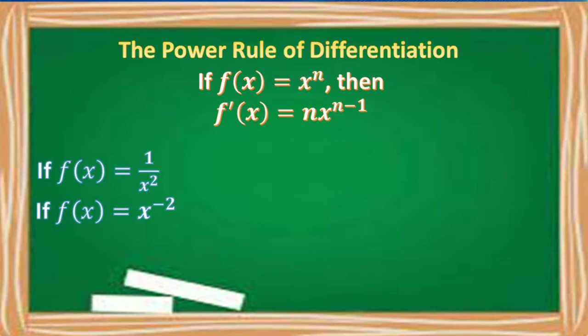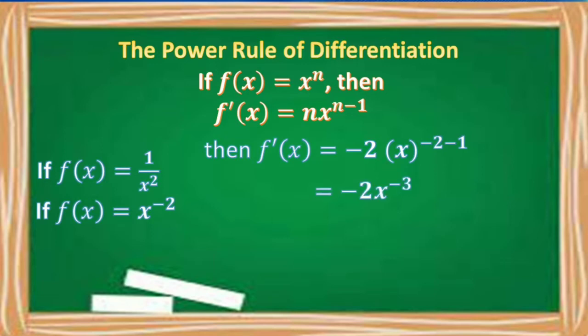We can now apply the power rule to get its derivative. So f prime of x is equal to negative 2 times x raised to negative 2 minus 1, which is equal to negative 2x raised to negative 3. To change the negative exponent to a positive exponent, we move x raised to negative 3 to the denominator, giving us negative 2 over x cubed.